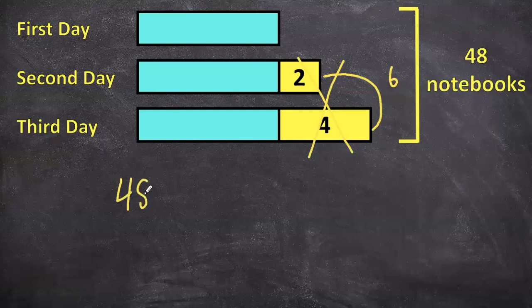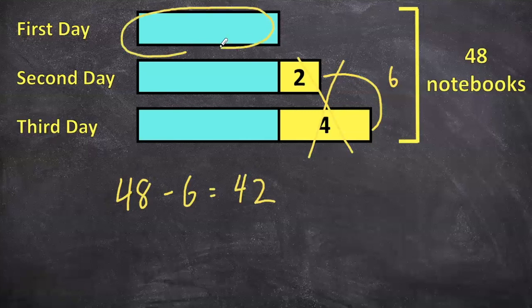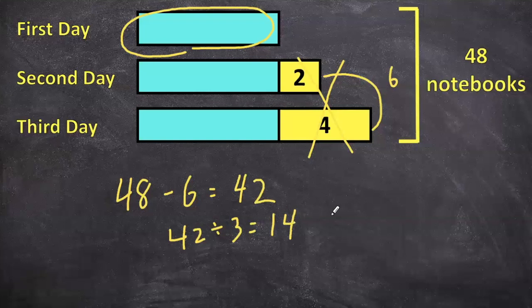So we can take the 48 and subtract the six from it, which would give us 42. So if you wanted to know how many notebooks George sold just on the first day, we can take the 42 and divide it by three, and we would get 14. So George sold 14 notebooks on the first day alone.